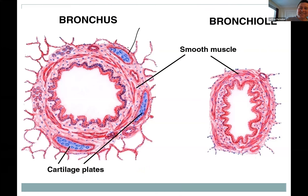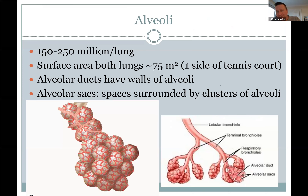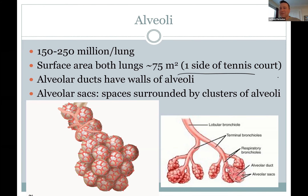A bronchus has cartilage; a bronchiole has no cartilage. In the alveoli, you see squamous cells with tons of blood vessels going through. The alveoli — millions of them, little polygon-shaped sacs, not perfectly like grapes. There are little pores connecting them, and little macrophages zooming around eating bacteria. They're lined by surfactant to keep them from sticking together. The surface area of your lungs is like half the size of a tennis court — amazing how much that is.